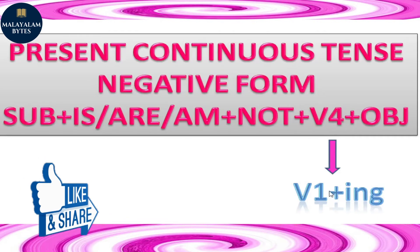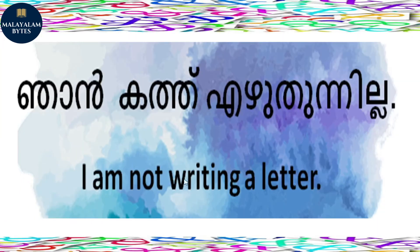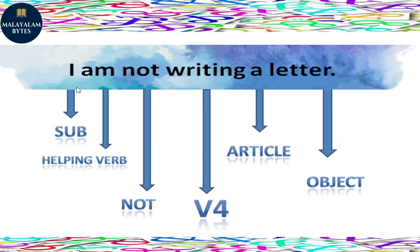Let me show an example. 'I am not writing a letter.' Here the subject is I, the helping verb is am, we add not for negation, then the fourth form - writing, and the object is a letter. We also use the indefinite article 'a'. So: I am not writing a letter.